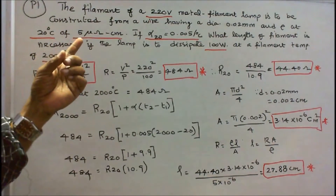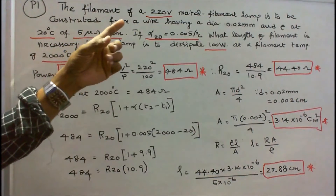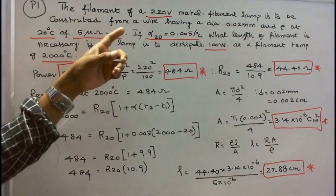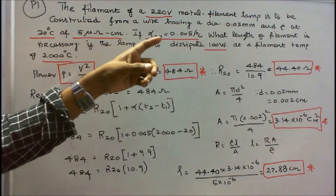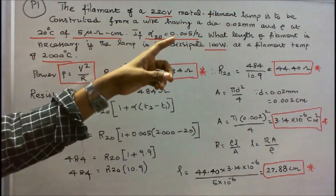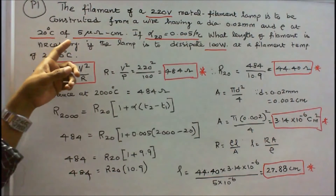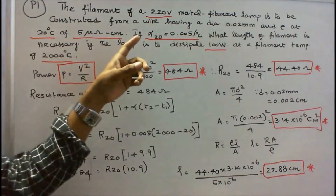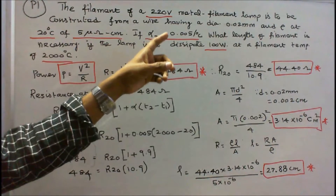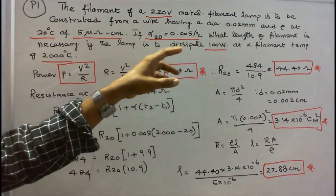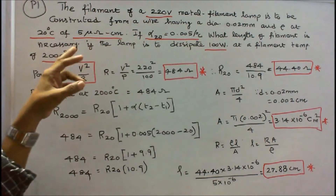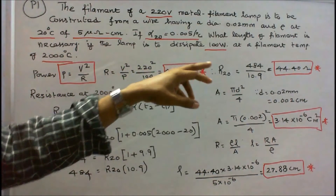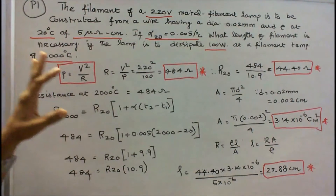Problem number 1. The filament of a 220 volt metal filament lamp is to be constructed from a wire having a diameter of 0.02 mm and resistivity at 20 degree centigrade of 5 micro ohm centimeter. If temperature coefficient alpha is equal to 0.005 per degree centigrade, what length of filament is necessary if the lamp is to dissipate 100 watts at a filament temperature of 2000 degree centigrade?